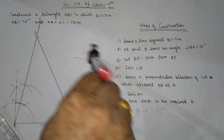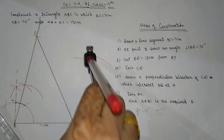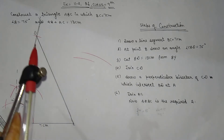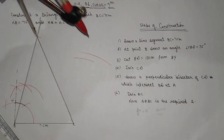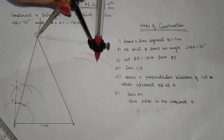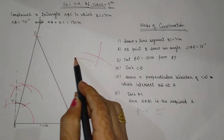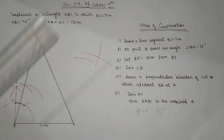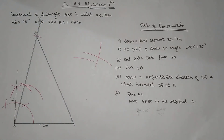Sorry, the first arc drawn was wrong. This way you will join. Then at the same D point, you will join this way. Then what will happen? You will join D here.